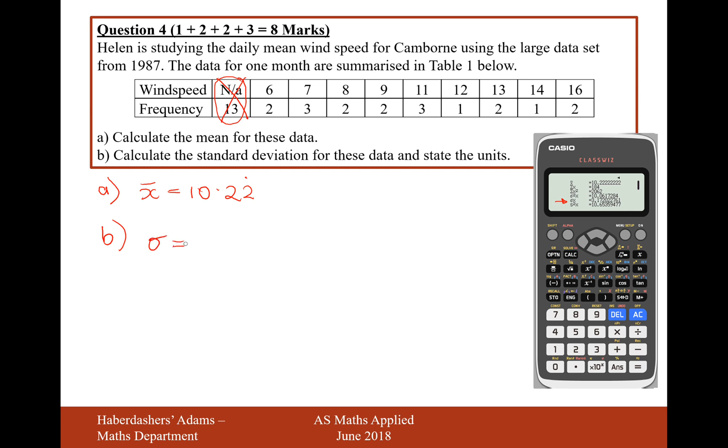Now just a reminder, the standard deviation formula is the sum of x squared over n minus the mean squared. So let's just type in those values. Now we've got the sum of x squared, that's the third row down, that's 2,062, divided by 18 minus 10.2 recurring squared, and then that must equal the mean, which is 3.17.